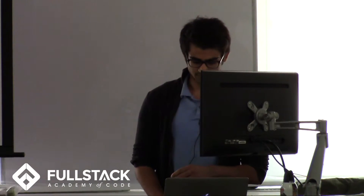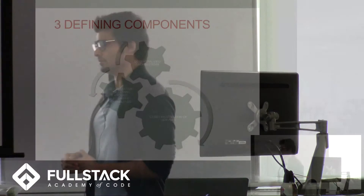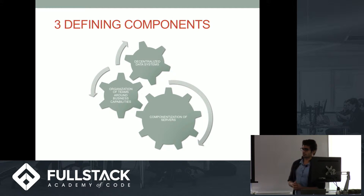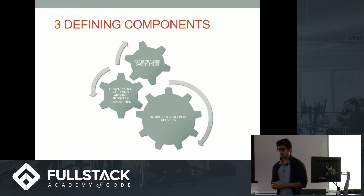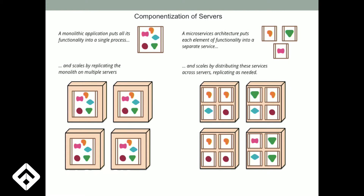There are three defining components of any microservices architecture. The first, and probably the most important, is the concept of components. In the context of microservices, components means that individual services can be replaced and upgraded independently of other applications.